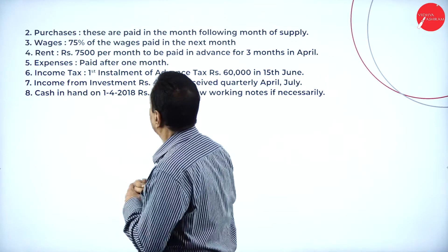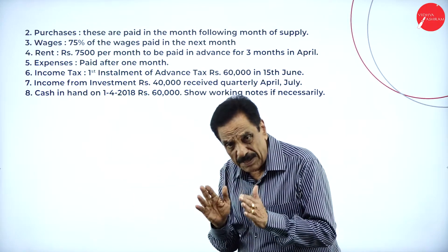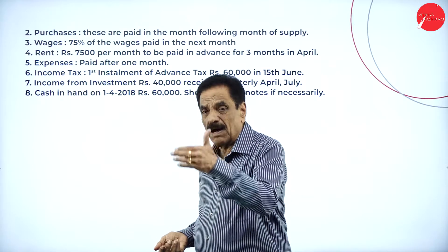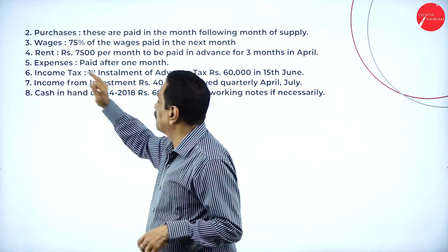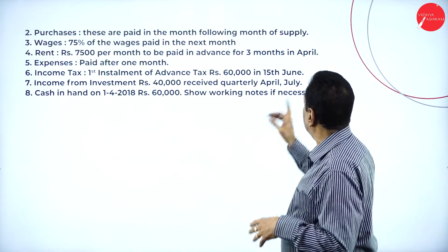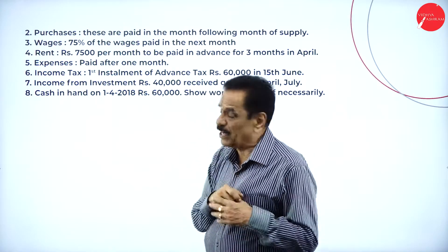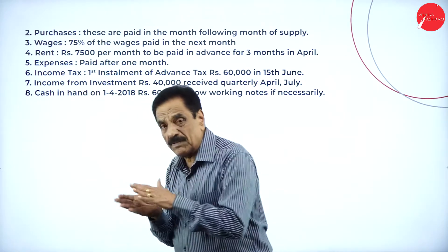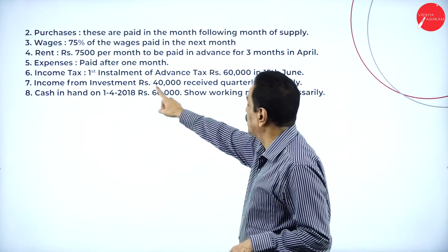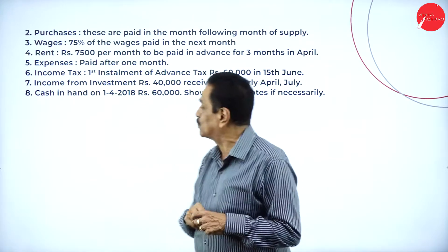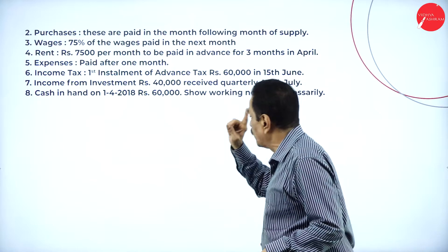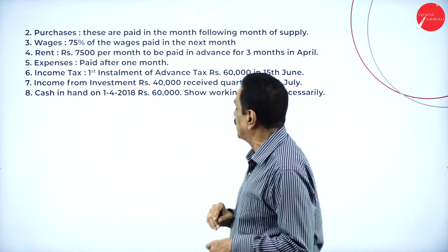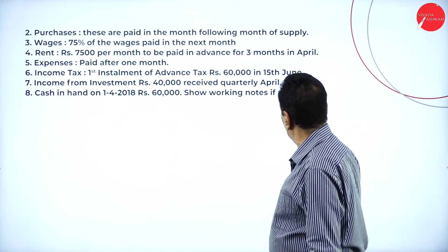Wages: 75% of wages are paid in the next month, meaning 25% is paid in the same month. Rent is 7,500 per month, to be paid in advance for three months in April — that is 7,500 × 3 = 22,500 paid in April. Expenses are paid after one month. Income tax first installment: 60,000 paid in June. Income from investment is 40,000 received quarterly in April and July. Opening cash balance is 60,000.